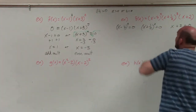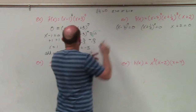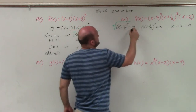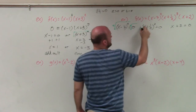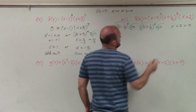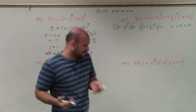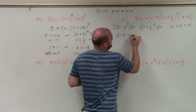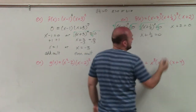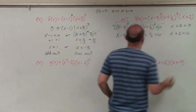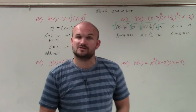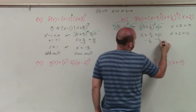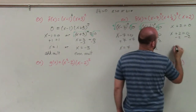To solve, we undo the fourth power by taking the fourth root, which leaves x minus 7 equals zero. We undo the cube by taking the cube root, leaving x plus one-half equals zero. The last factor gives x plus 2 equals zero. Applying inverse operations: add 7 to get x equals 7; subtract one-half to get x equals negative one-half; subtract 2 to get x equals negative 2.